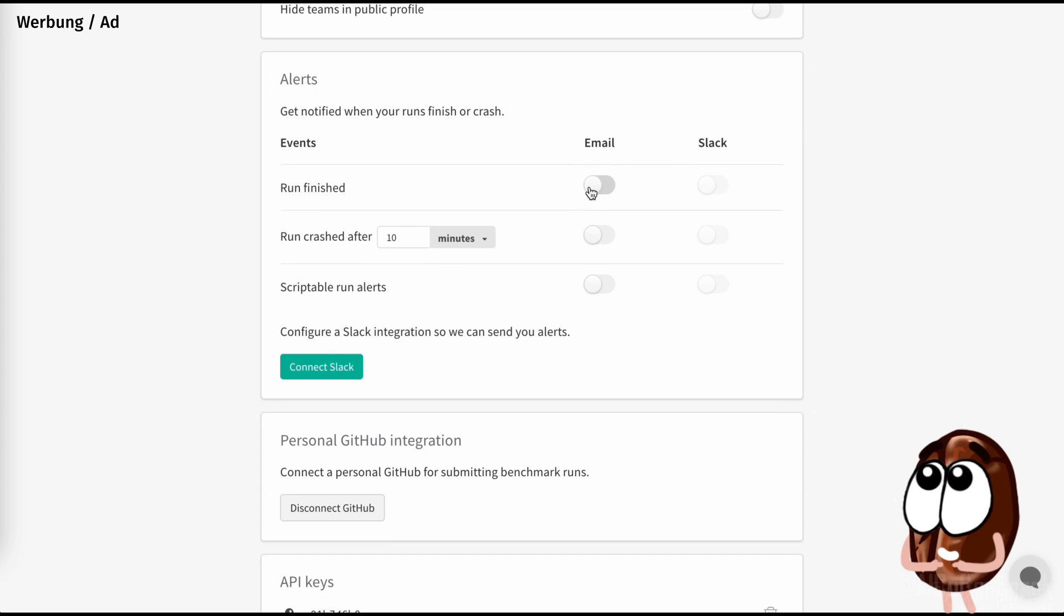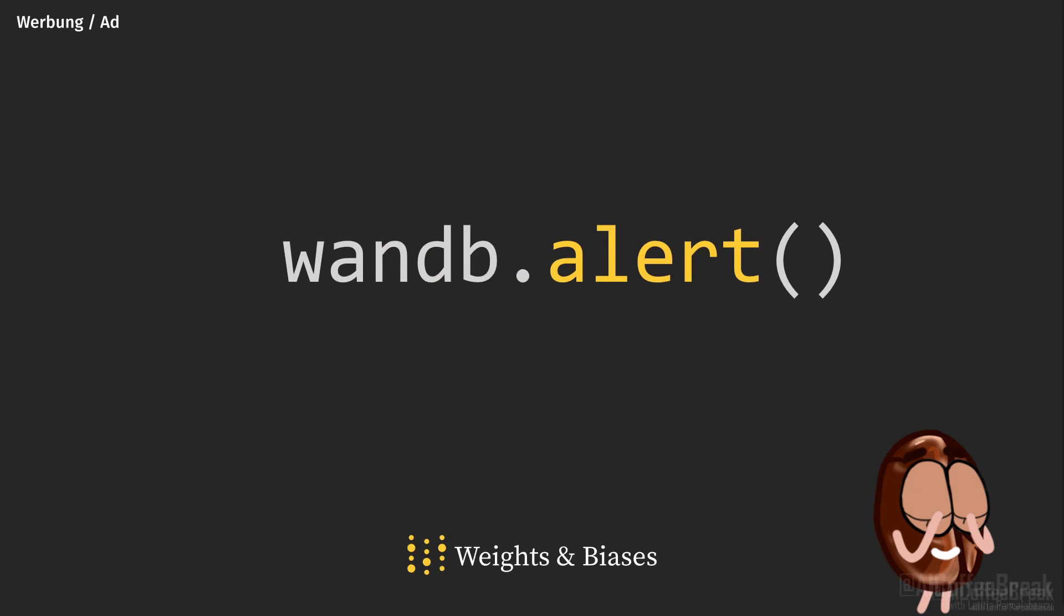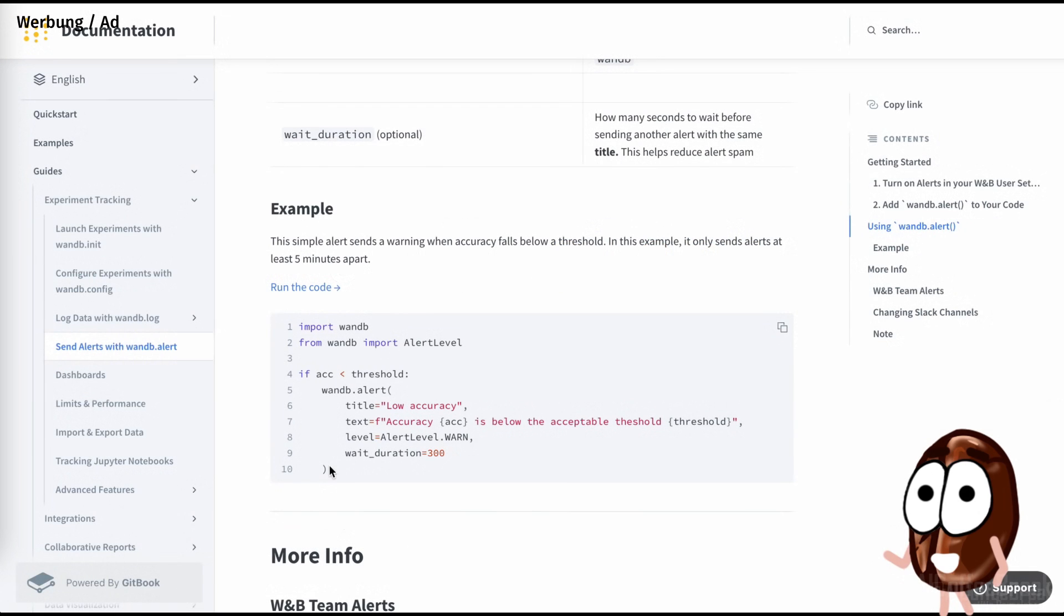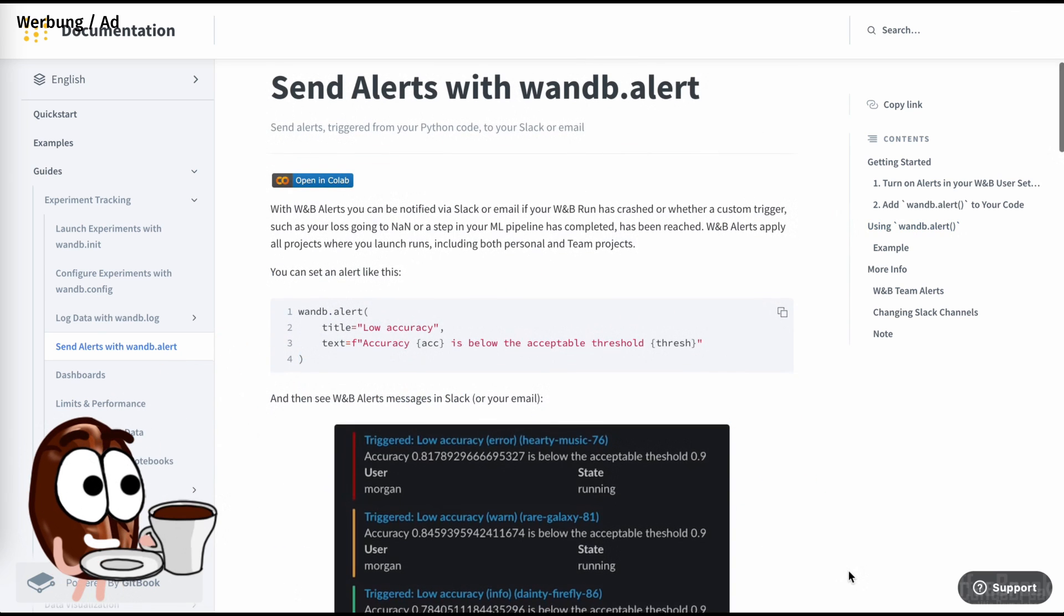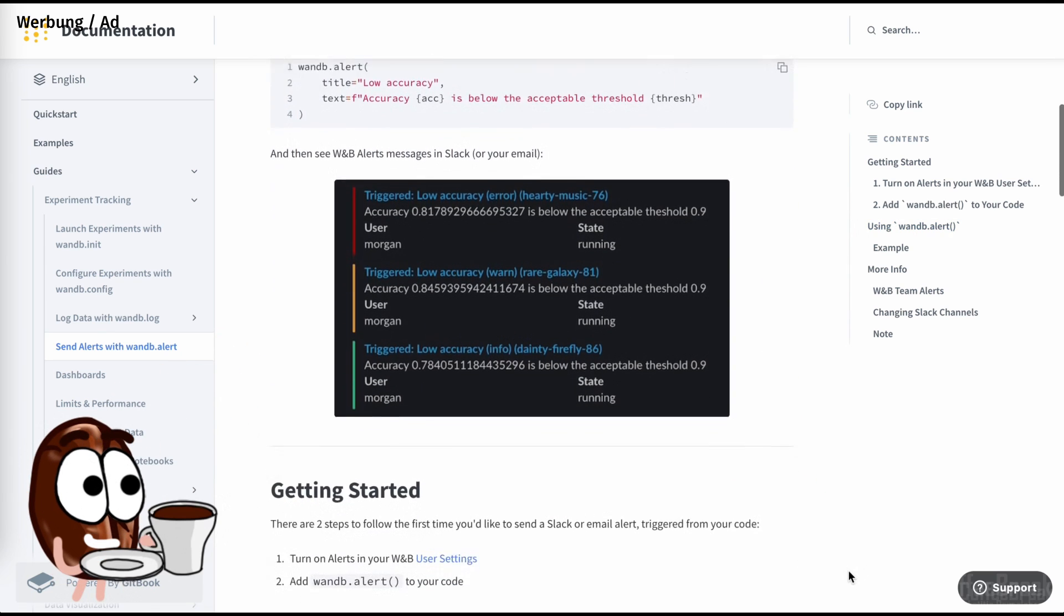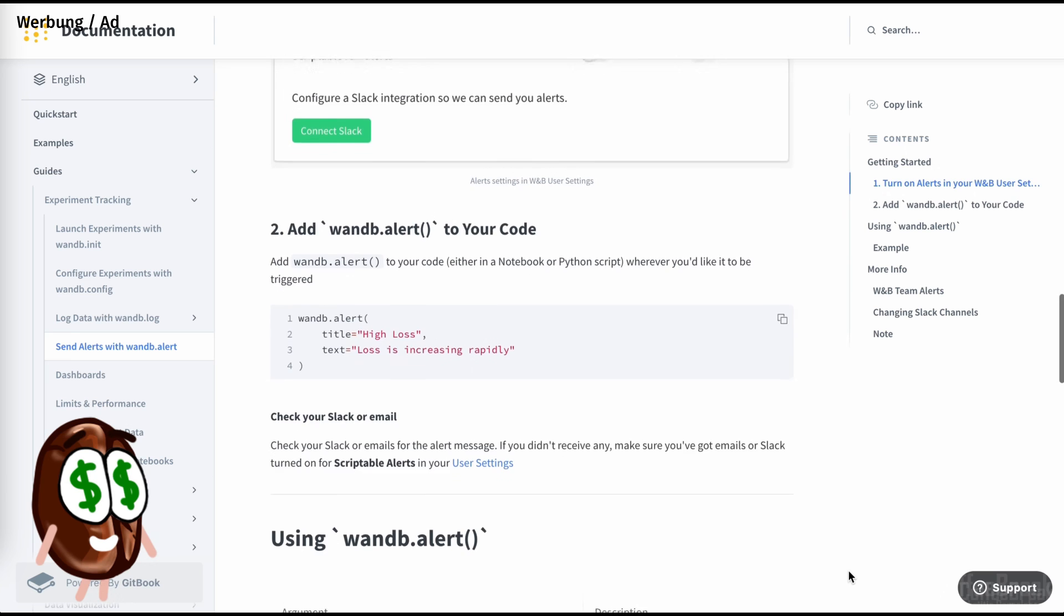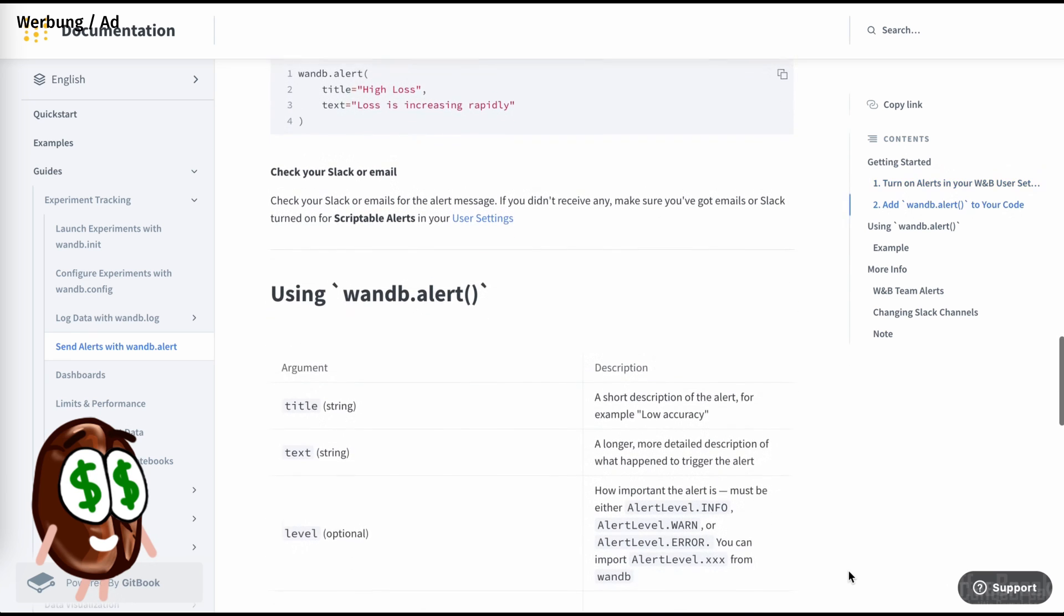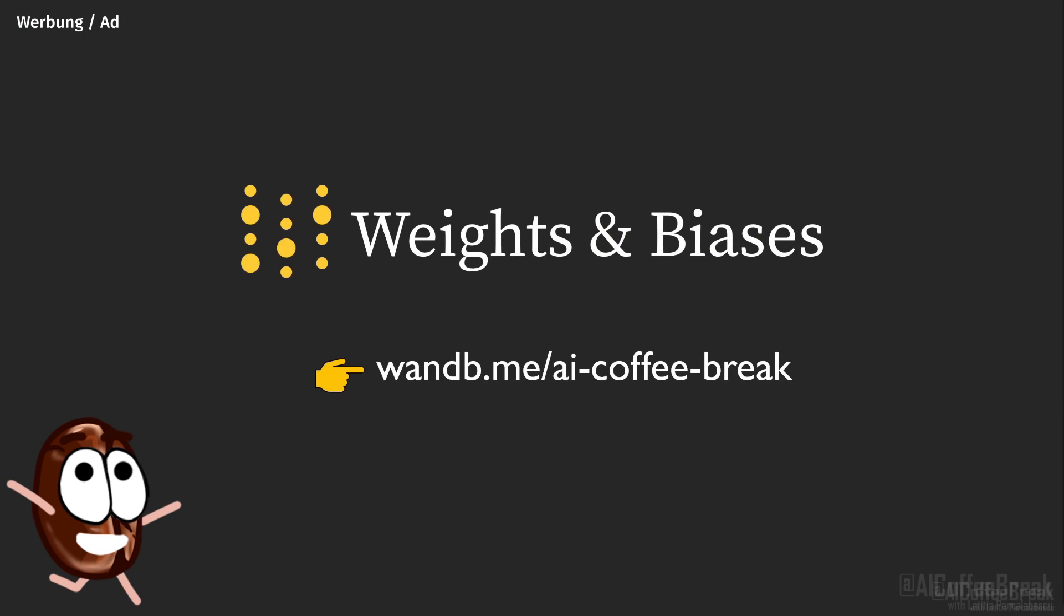Get started with Weights and Biases Alerts in two quick steps. Turn on Alerts in your Weights and Biases user settings. You can get notified via Slack or email for whether your run is finished, whether it has crashed, or any other custom trigger you like. For custom triggers, add wandb.alert to your code wherever you'd like to be alerted. I think that the alert feature is extremely useful even in my low-cost projects, but imagine that some Weights and Biases users have saved large cloud GPU bills by being alerted early to crashed runs while training large, expensive models.